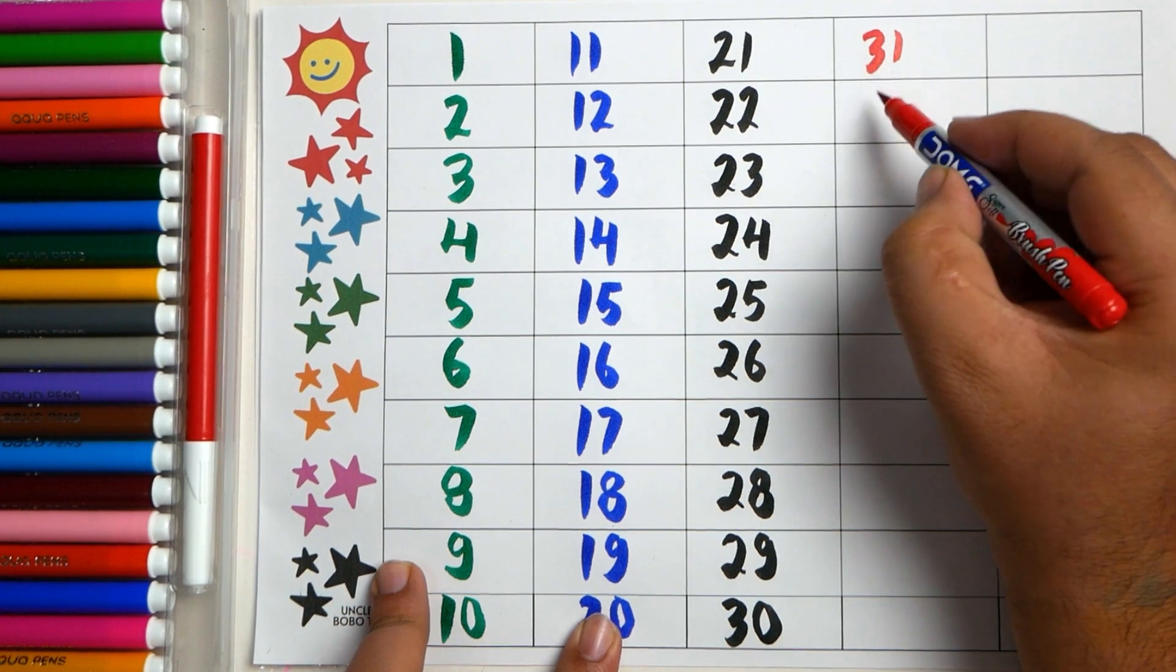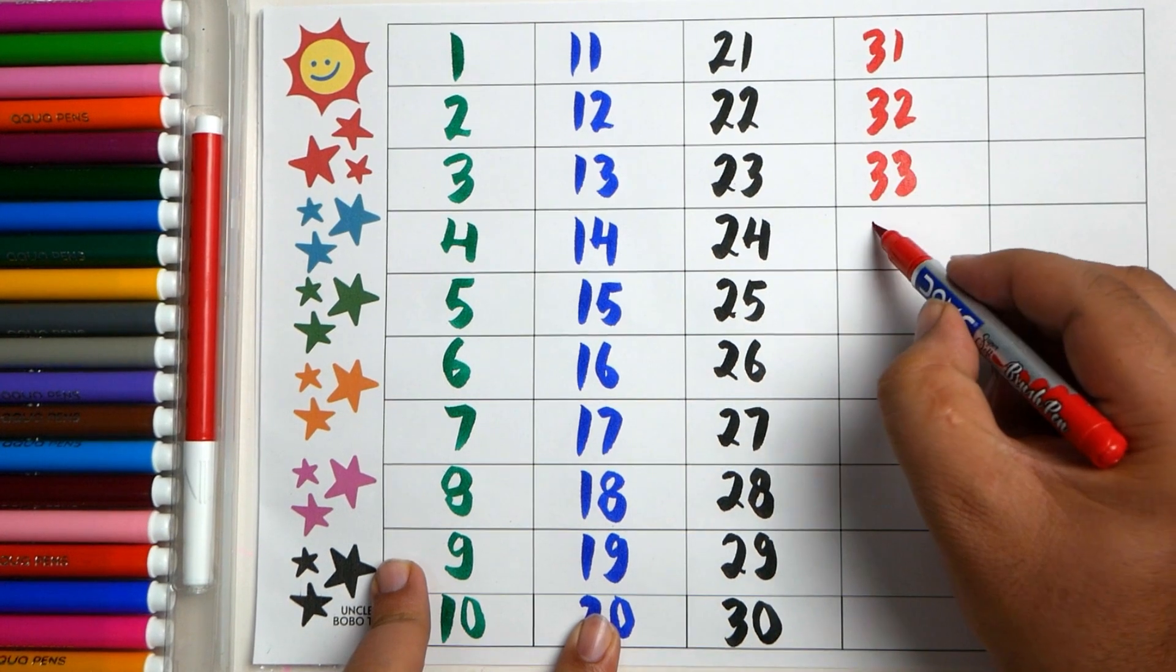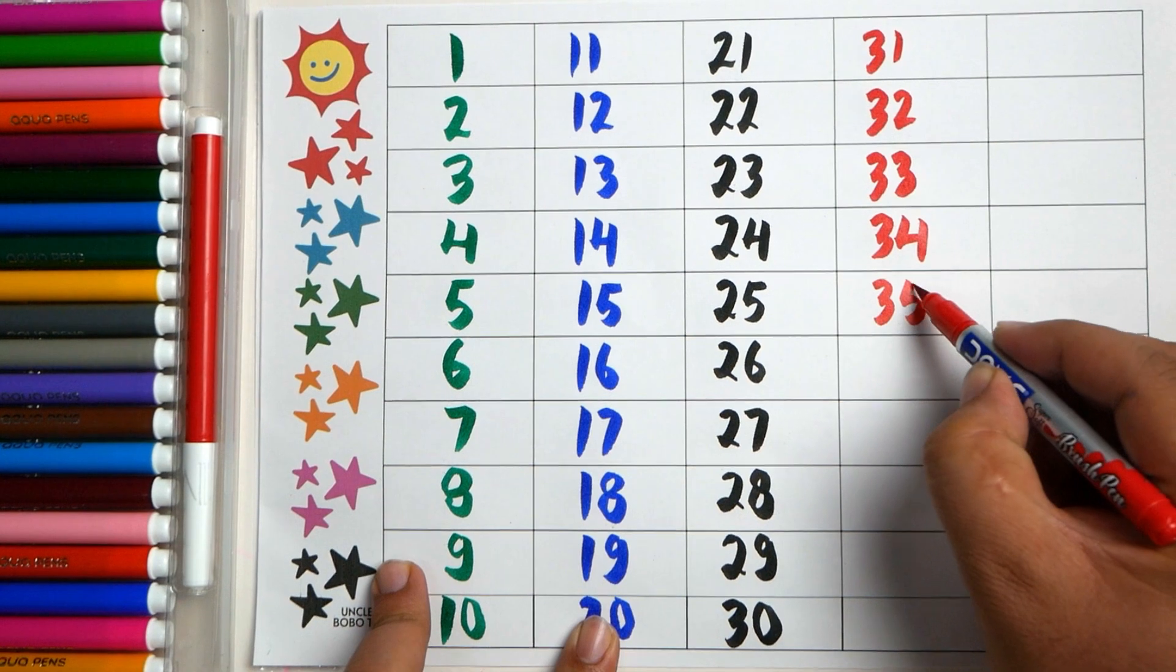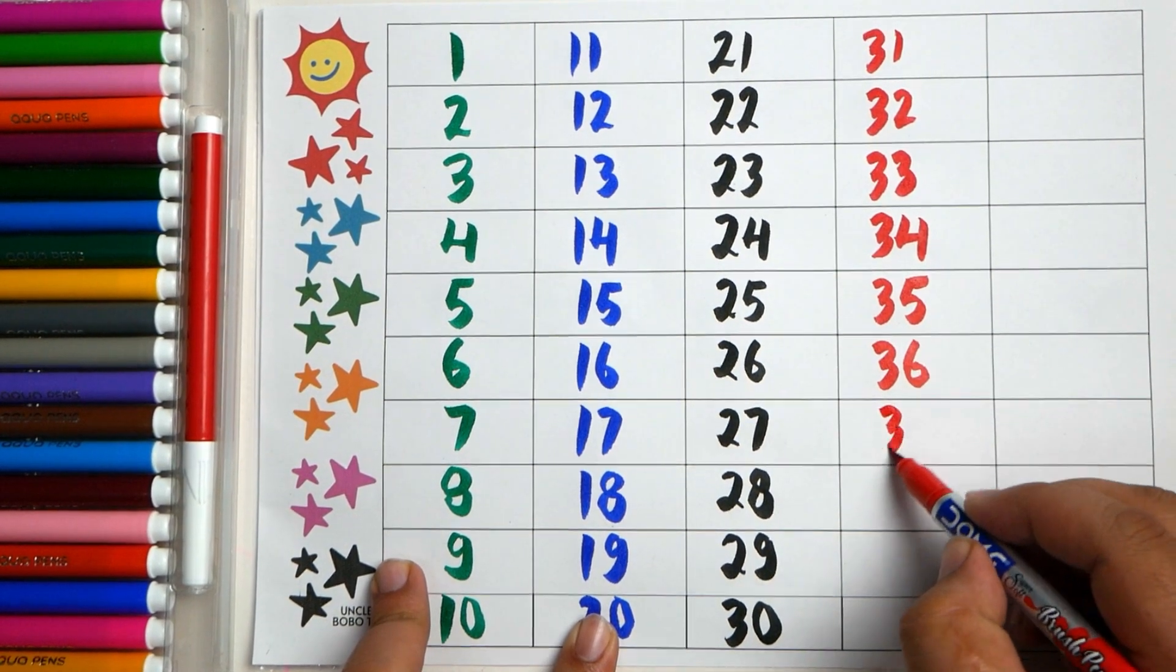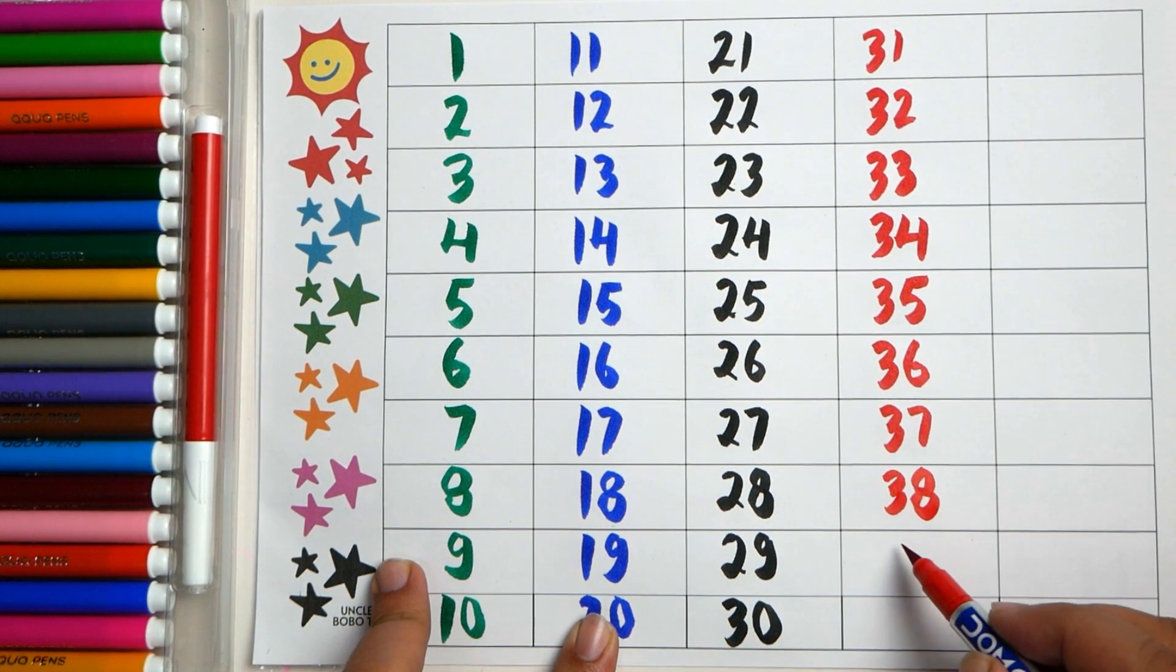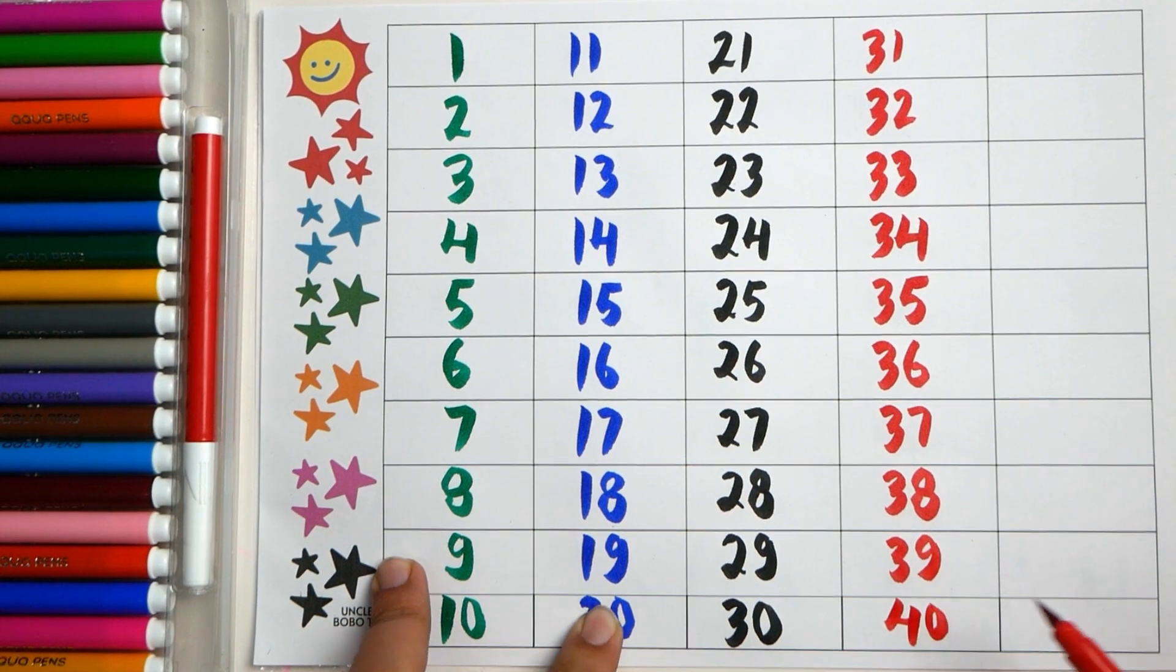Thirty-one, thirty-two, thirty-three, thirty-four, thirty-five, thirty-six, thirty-seven, thirty-eight, thirty-nine, forty.